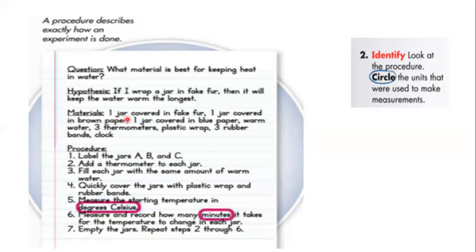Materials: one jar covered in fake fur, one jar covered in brown paper, one jar covered in blue paper, warm water, three thermometers, plastic wrap, and three rubber bands, clock. Now the procedure.